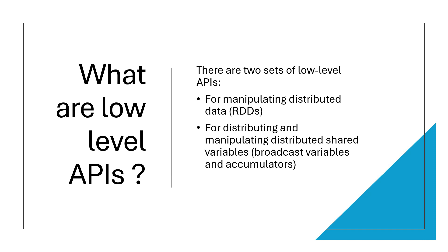What are low-level APIs? There are two sets of low-level APIs. One of them is RDDs — resilient distributed datasets — which we are going to look at today. Anybody who works in Spark knows about RDDs because they are the fundamental unit of Spark. The second category is for distributing and manipulating distributed shared variables. There are two types: broadcast variables and accumulators. These are variables that need to be shared across worker nodes and multiple tasks.